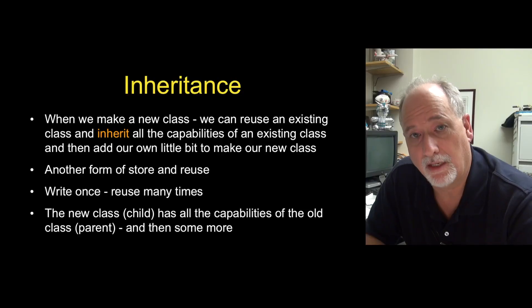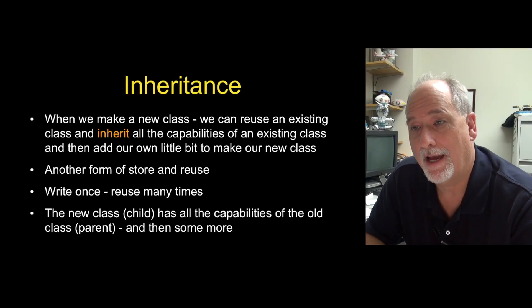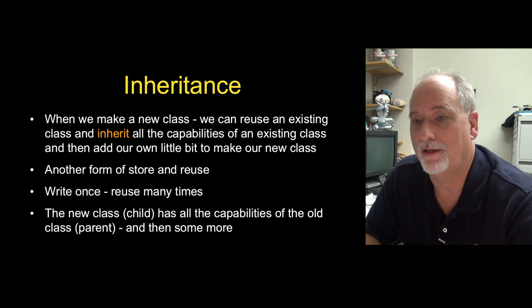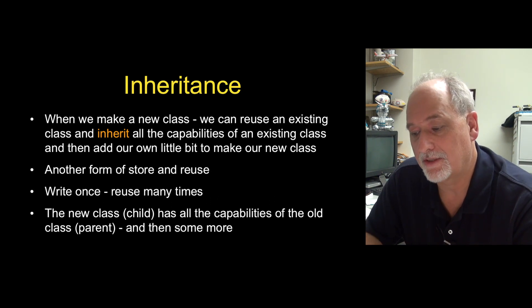The last topic in object orientation is the notion of inheritance. This is a form of code reuse, and it's one of the more advanced aspects of object-oriented programming. Instead of making a new class from scratch, we actually make a new class by starting with an existing class. We are extending it, or another word for this is subclassing.